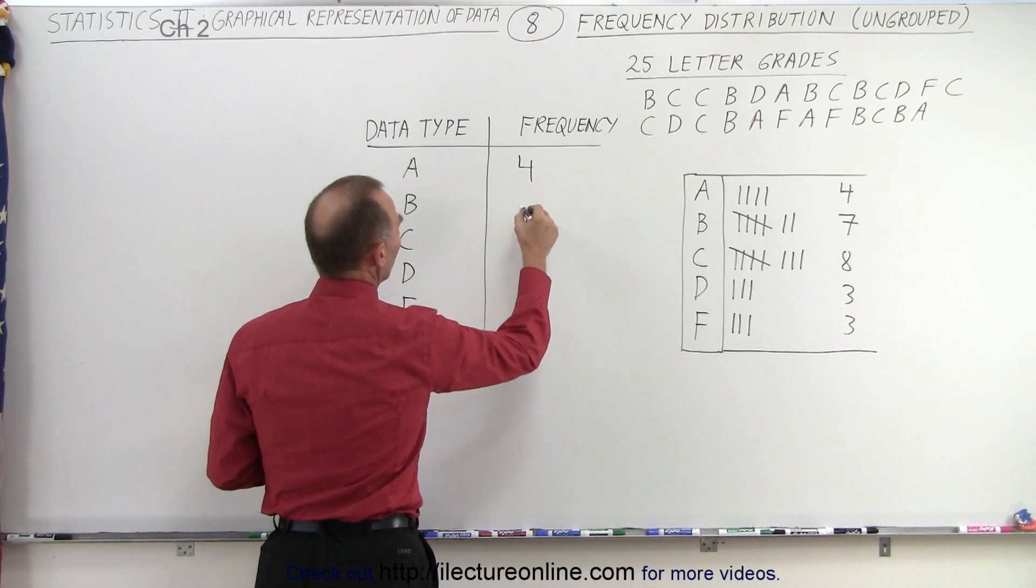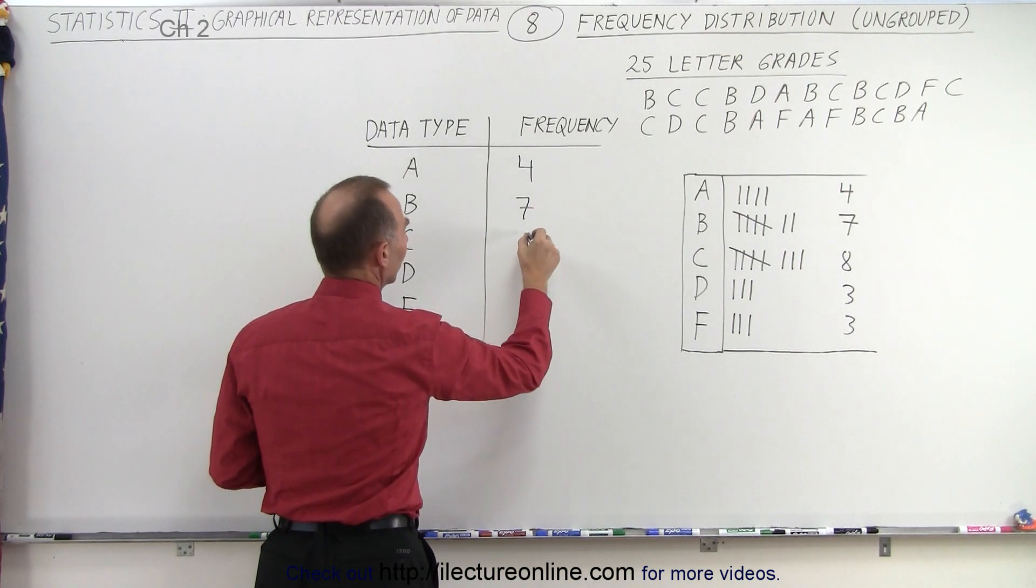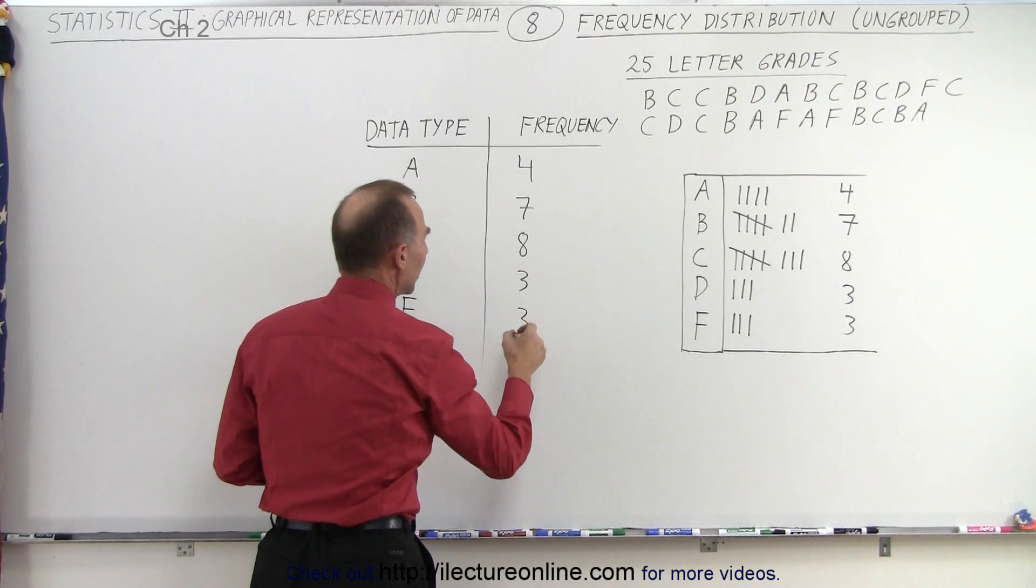So we have four A's, we have seven B's, we have eight C's, three D's and three F's.